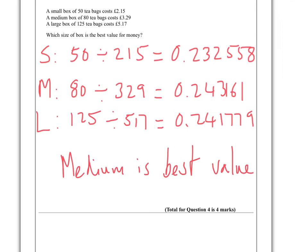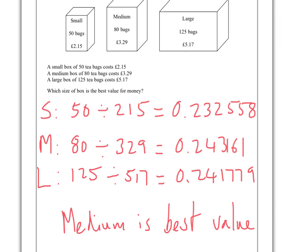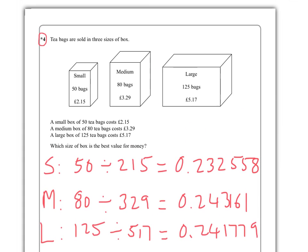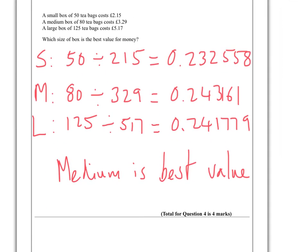125 divided by 517 — I get 0.2417 — hang on, look at that, that's why I do a bit more: 1779. Now I look at which one I get the most tea bags for per penny, and that's the medium. Medium is best value. Because it's a star question, I need to put in an explanation. 4 marks — you get 1, 2, 3, 4.